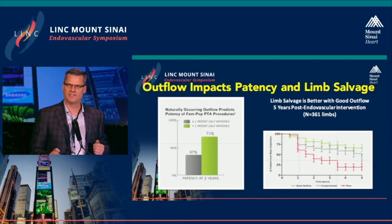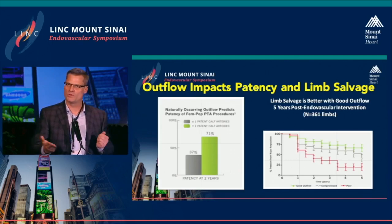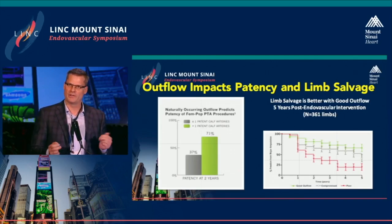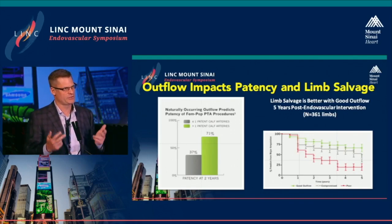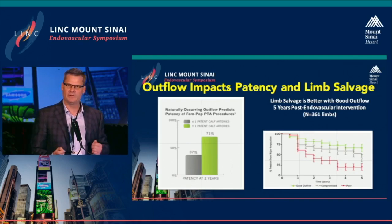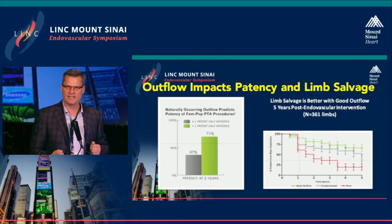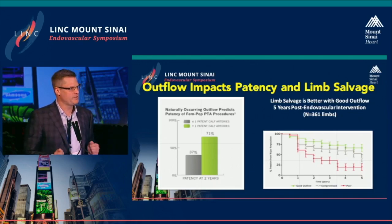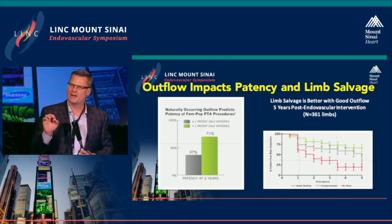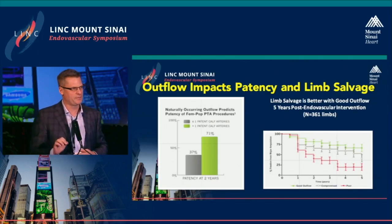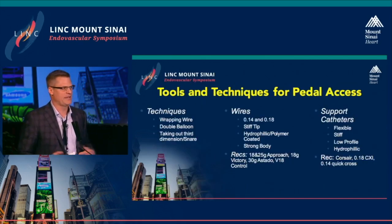So why are we doing these interventions? Because Galeno and Davies have shown us two things. First, if we open up the superficial femoral artery and popliteal, the patency of that depends on the tibial vasculature. If you have one or fewer tibials open at two years from a fem-pop bypass, patency is about 37%. However, if you have two or more tibials open, patency increases to 71%. Not only does patency improve, but limb salvage improves as well, as shown in the diagram.